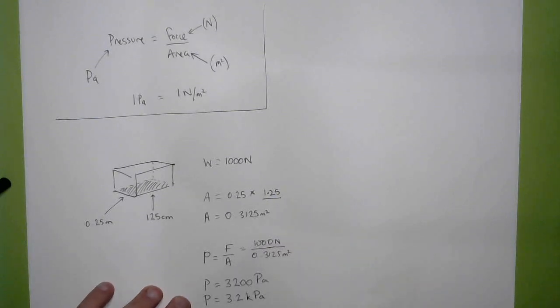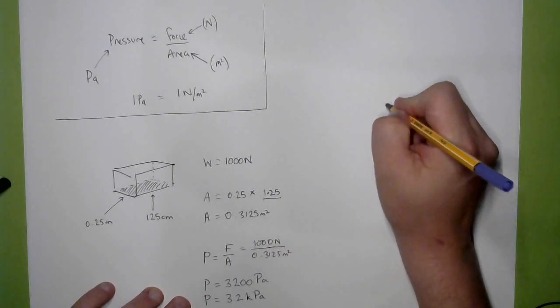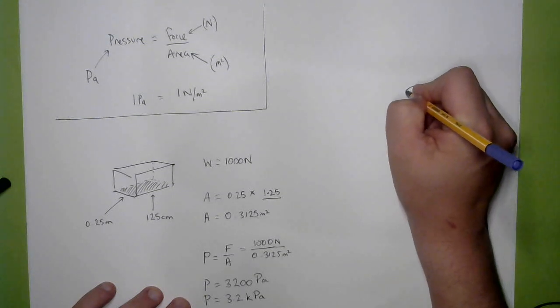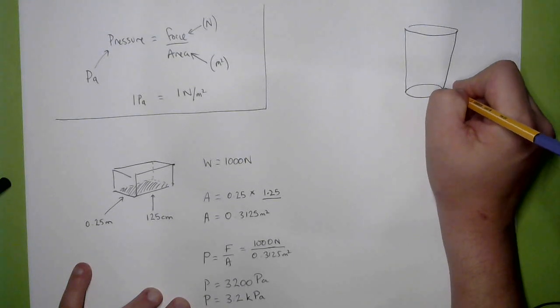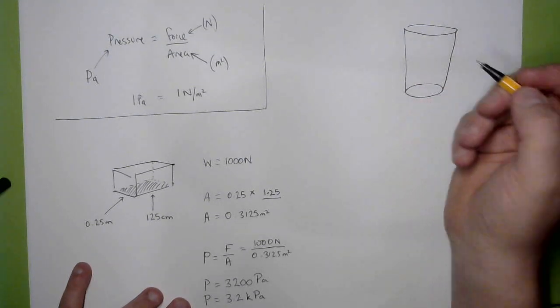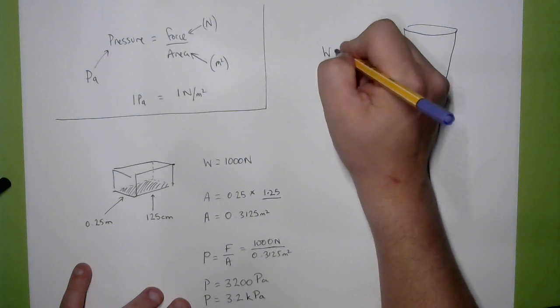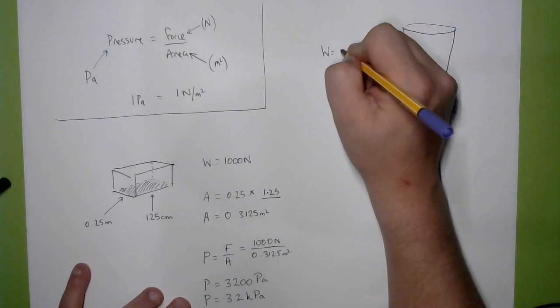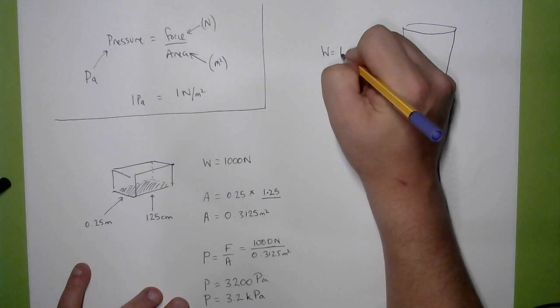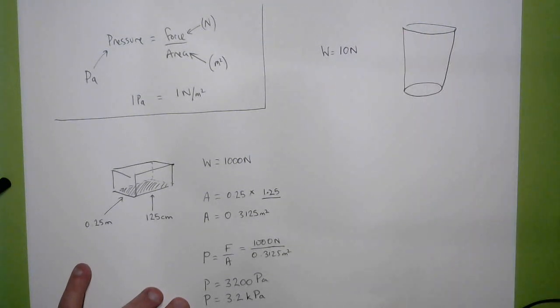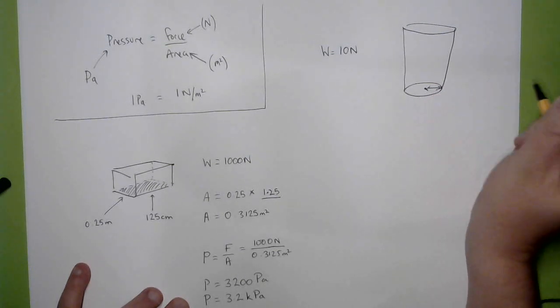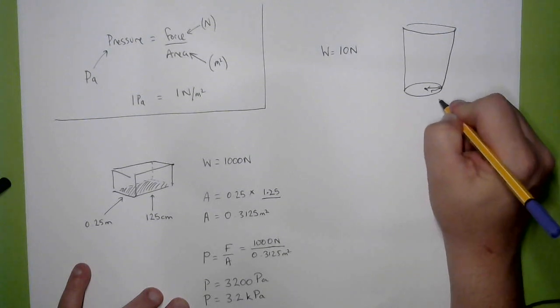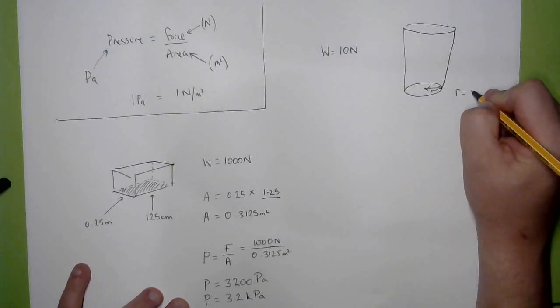What about if we had a glass for holding a drink? The weight of the glass and the drink was 1 kilogram, so we're looking at about 10 Newtons there. And if the glass had a radius, r, where r is 3 centimetres.